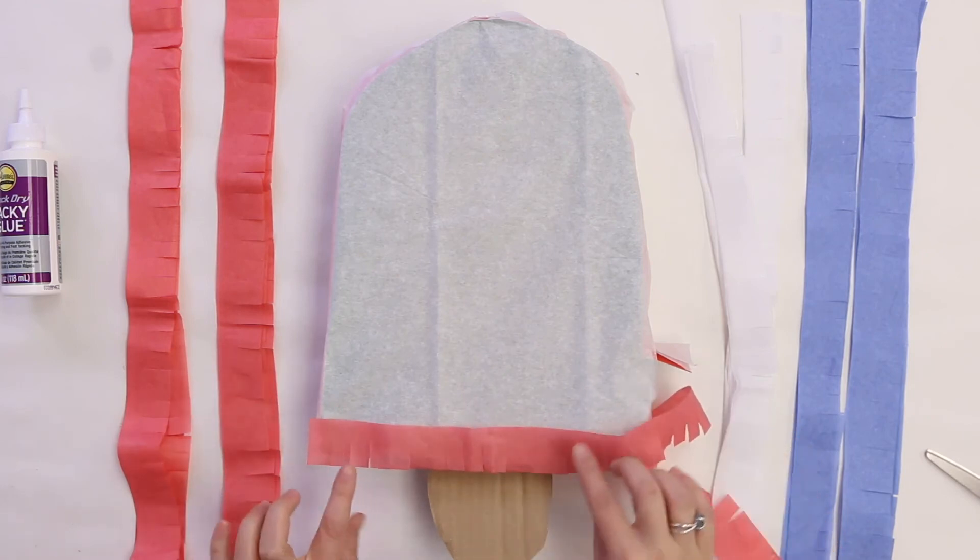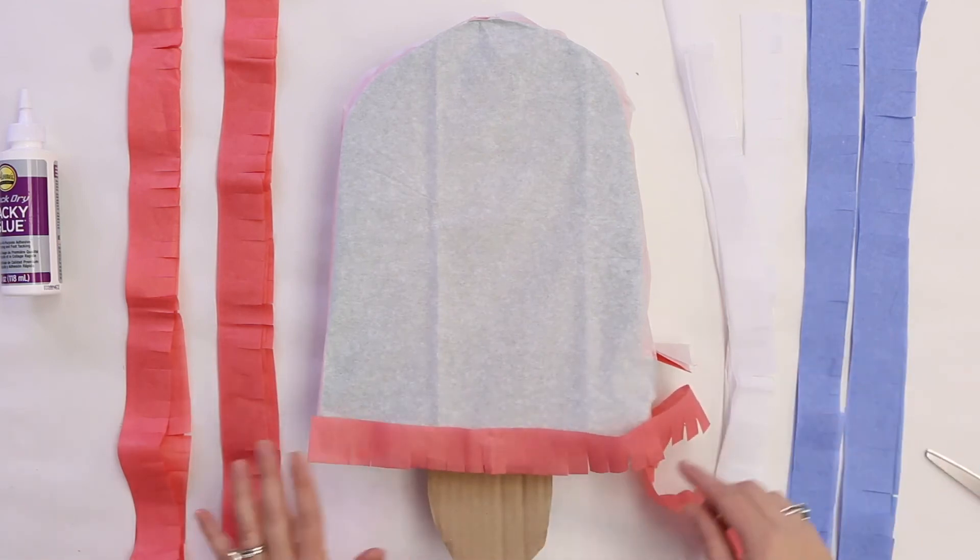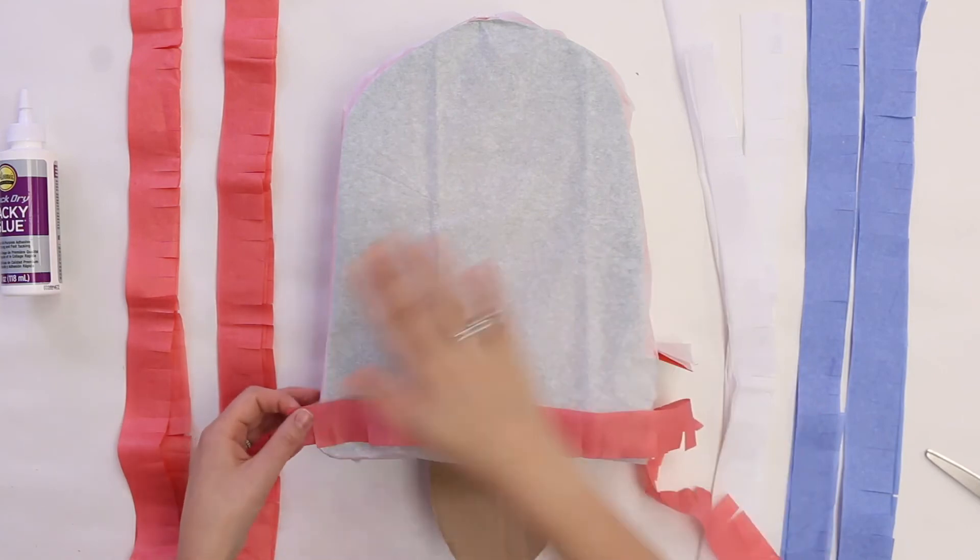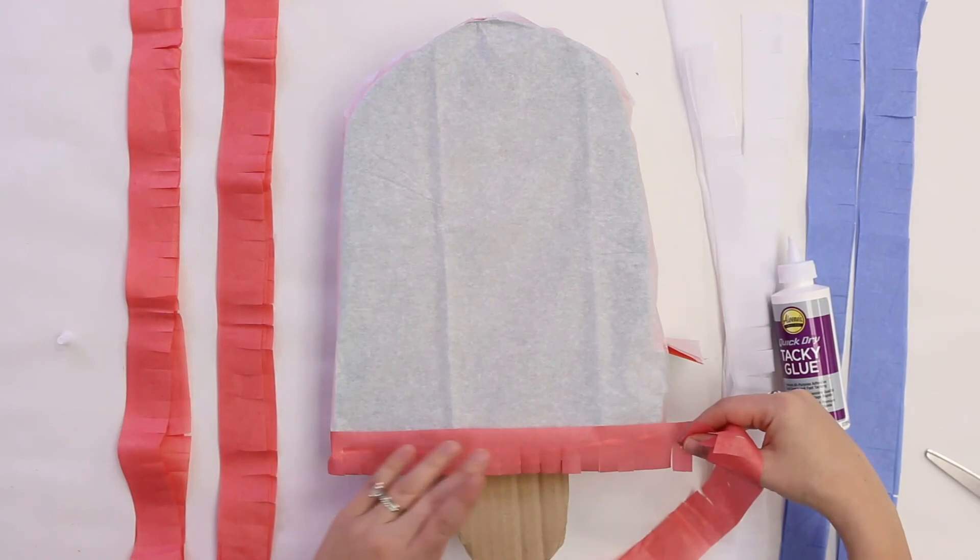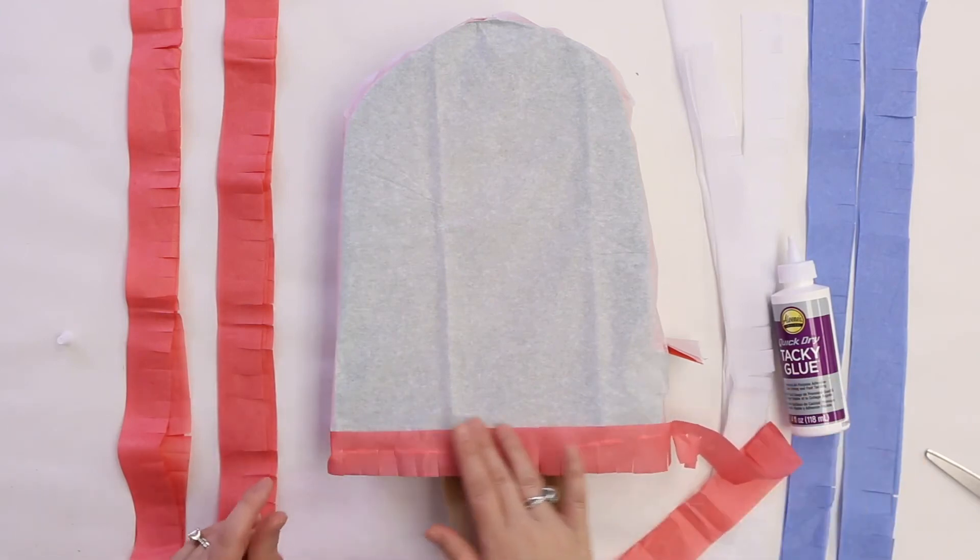Now remember, we're going to need to do the top, the sides, and the bottom. But we're going to start with the top and the sides and wrap around. So I'm going to start with my first layer and I'm going to go red, white, blue.